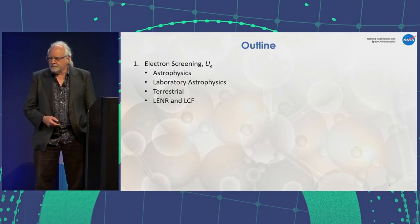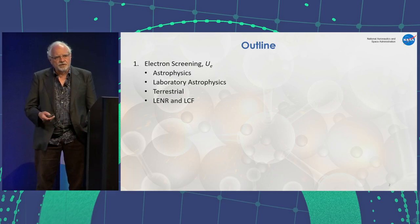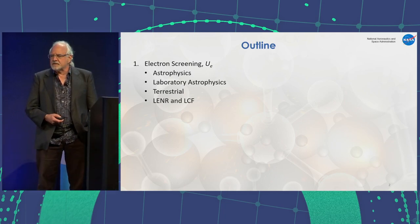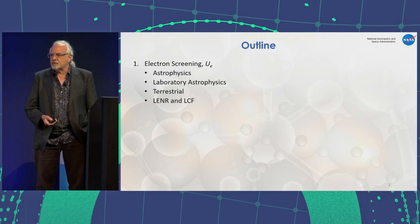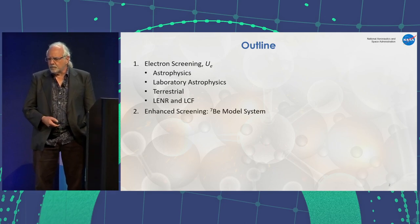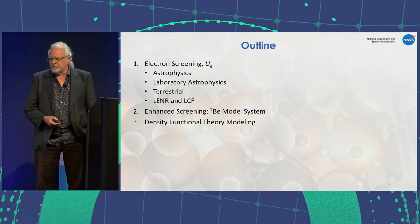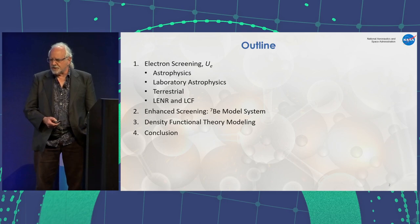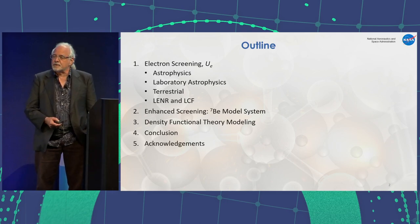My outline goes through Electron Screening, denoted as U sub E. It has applications in astrophysics, laboratory astrophysics, terrestrial, Lennar, and lattice confinement fusion, or LCF. We'll talk about the enhanced screening of the Beryllium-7 model system, look at some density functional theory modeling that we've done, a conclusion, and then some acknowledgments.